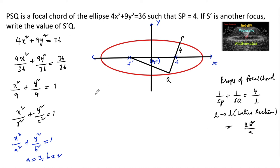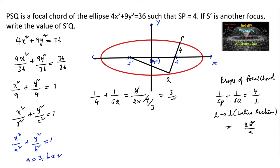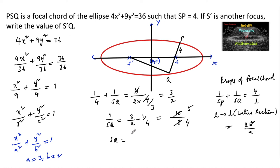So we write 1/SP + 1/SQ = 4/(2b²/a). Since SP = 4, b² = 4, and a = 3, this simplifies to 3/2. So 1/SQ = 3/2 − 1/4 = 12/8 − 2/8 = 10/8 = 5/4. Therefore SQ = 4/5.